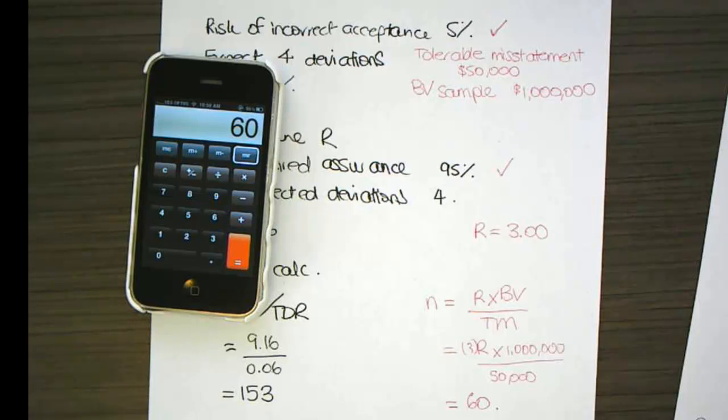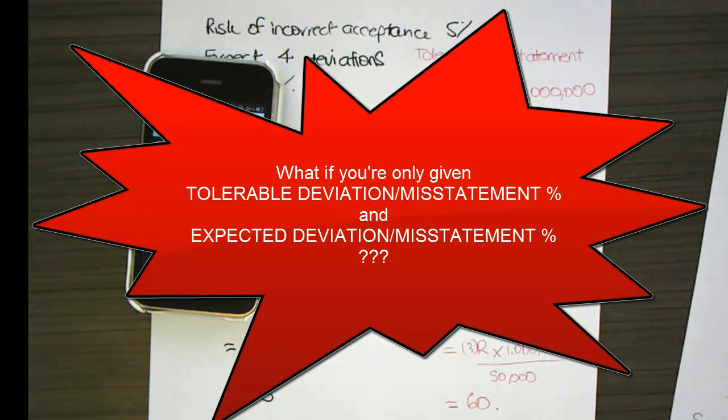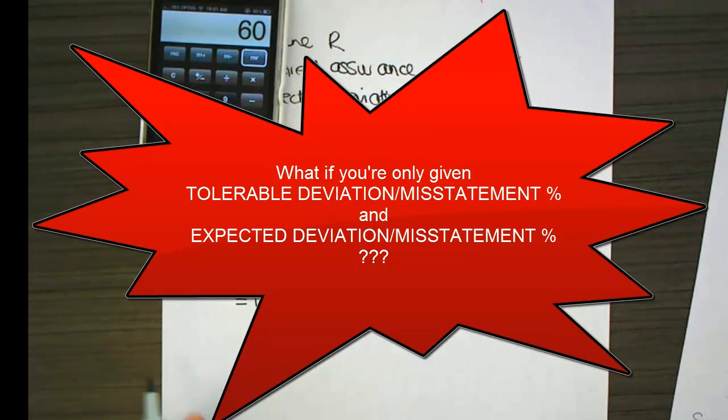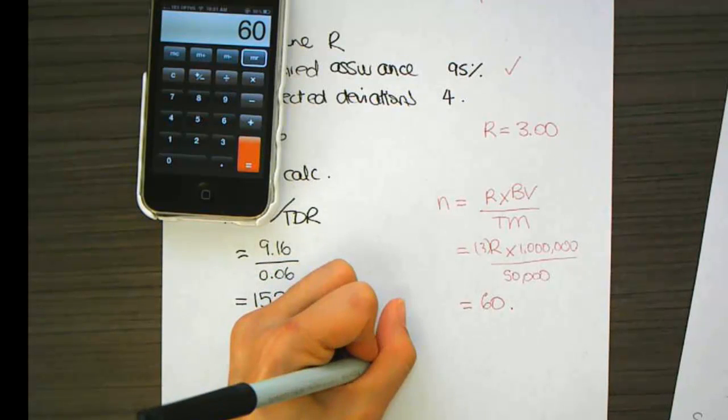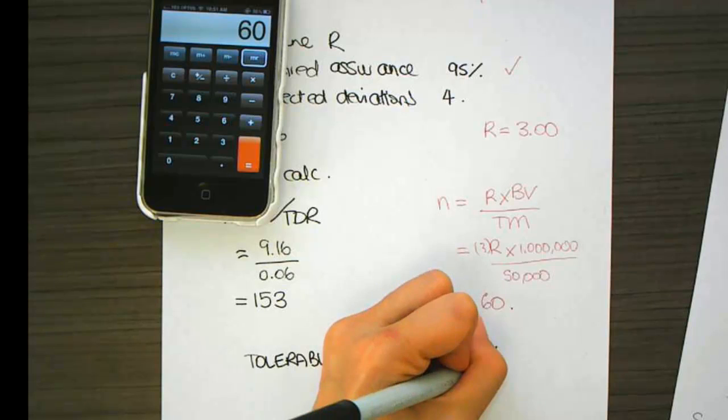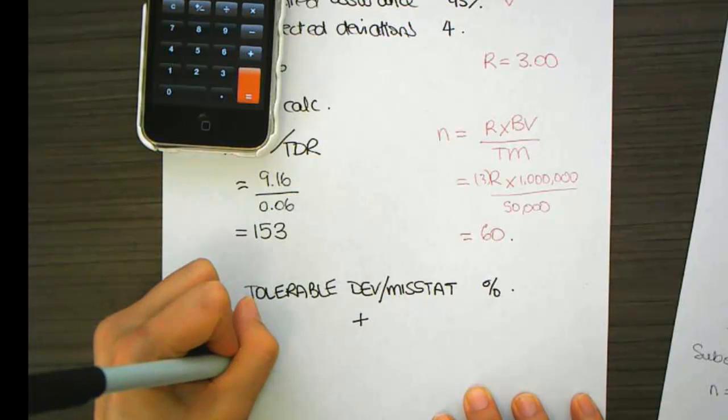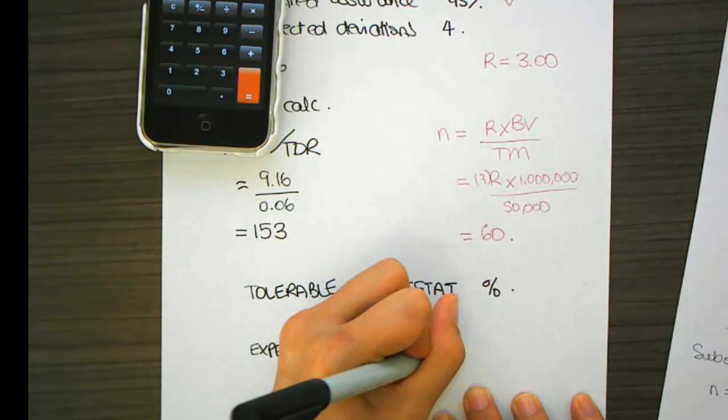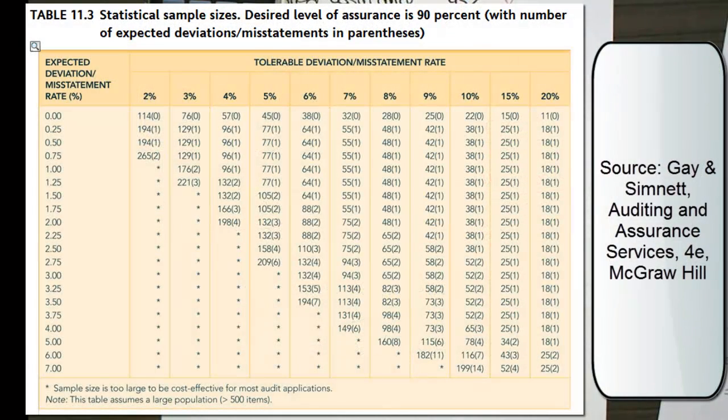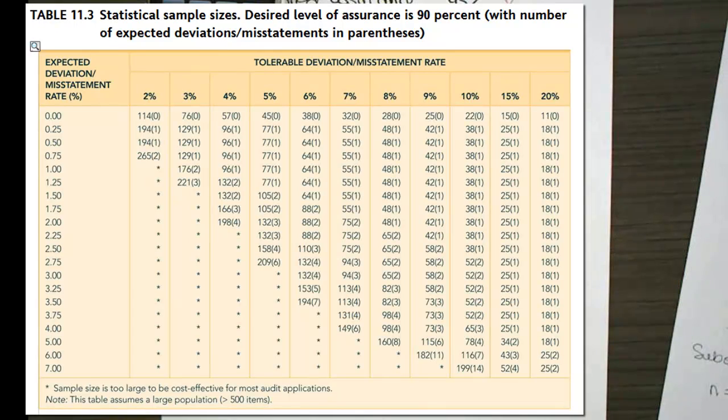Now what happens if, instead of being able to calculate R, instead you have the tolerable deviation rate and the expected deviation, or misstatement amount. So if you have, instead of this information, you get given either, or you should be given two things, the tolerable deviation, or misstatement rate as a percent, and you're given the expected deviation, or misstatement, as a percent. Then, you're going to use a number of other tables. And those two tables are actually based on statistical calculations, which allow you to use a matrix to match up your expected deviation, or percentage, or misstatement amount, and the tolerable deviation, misstatement rate. Match two items together to be able to give you your actual sample sizes.